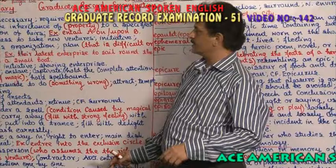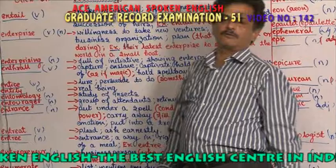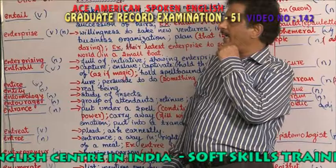Dear friends, welcome to A.S. American English Center. What you are going to see is the GRE or GMAT vocabularies which you have to learn. The vocabulary: D stands for verb, M stands for noun, ADJ stands for adjective.